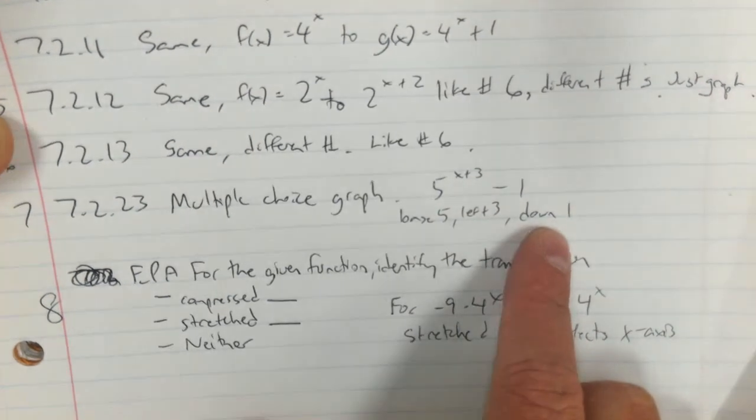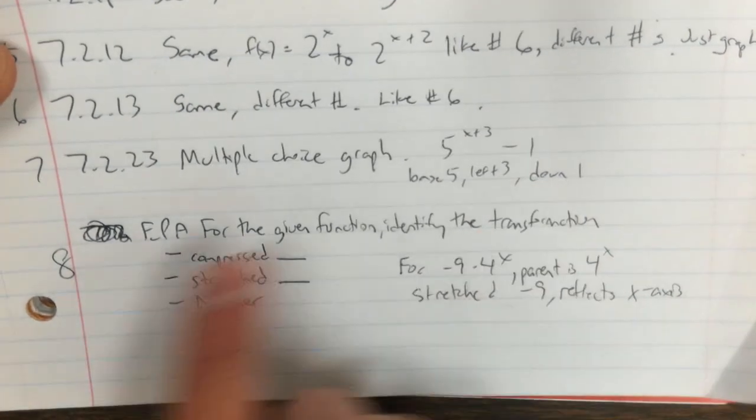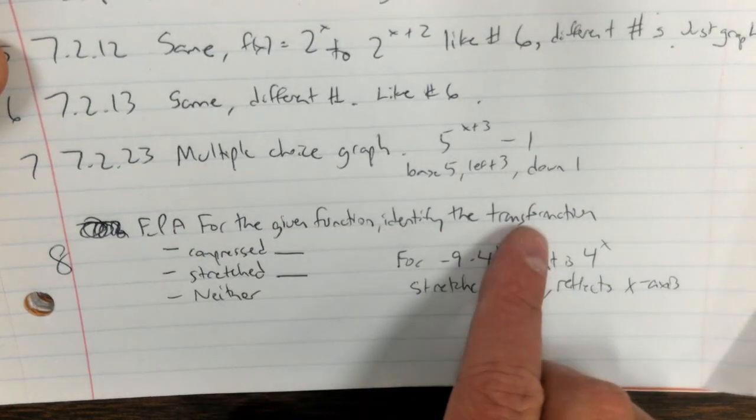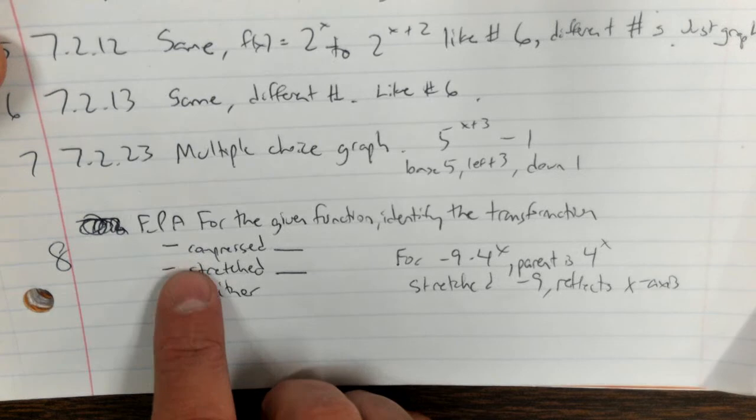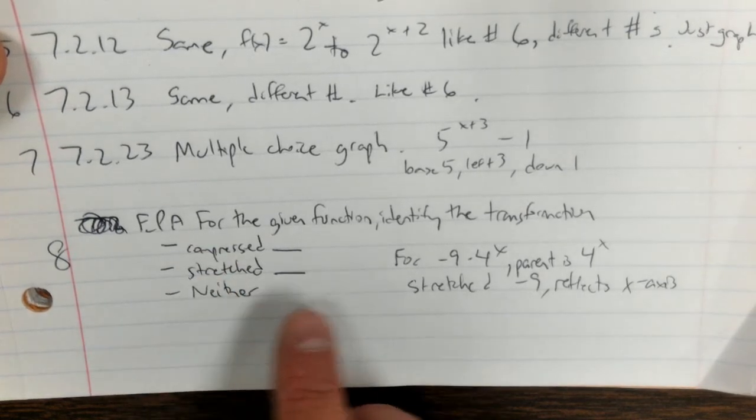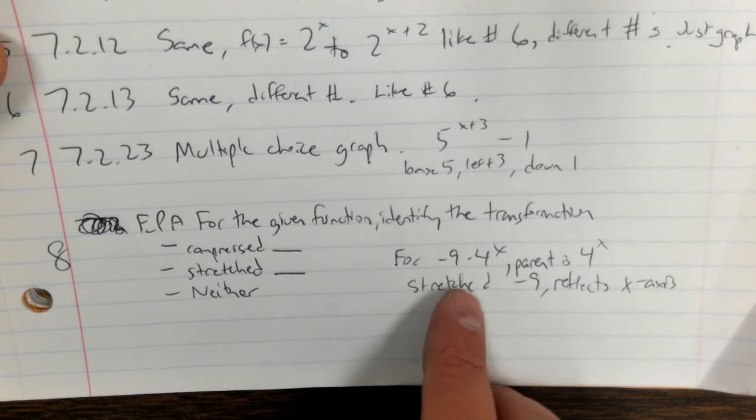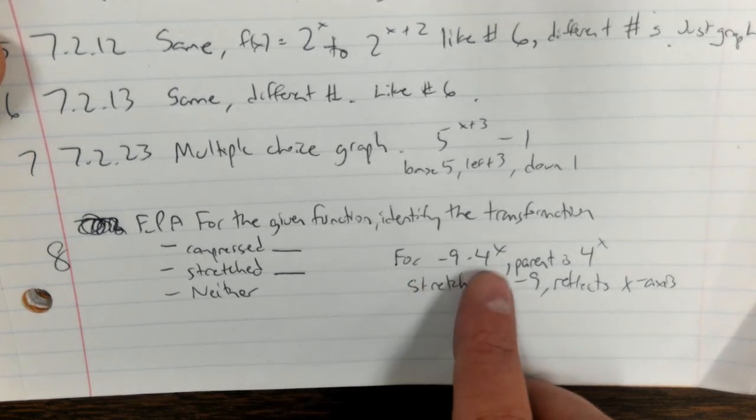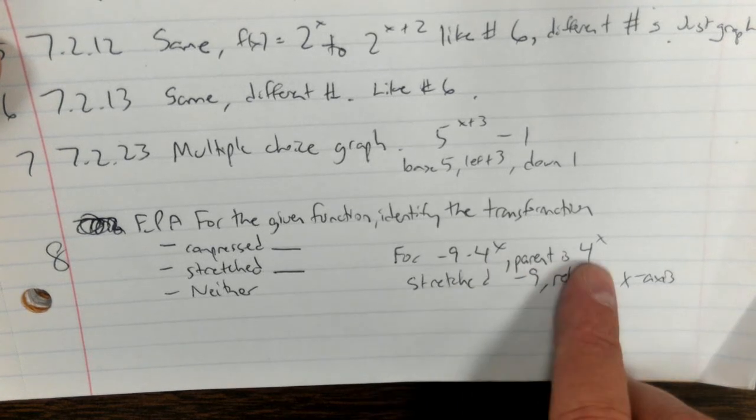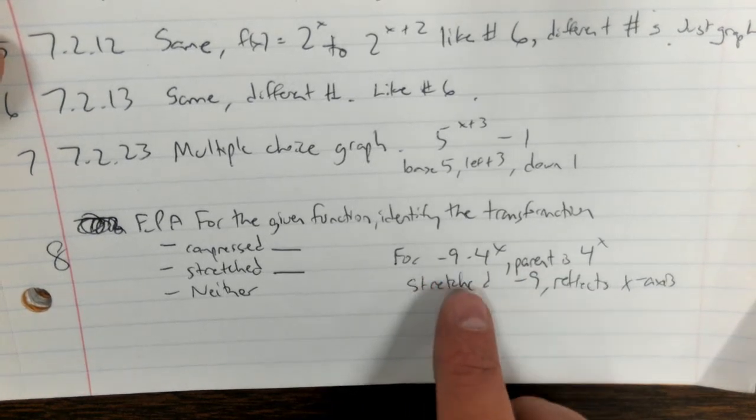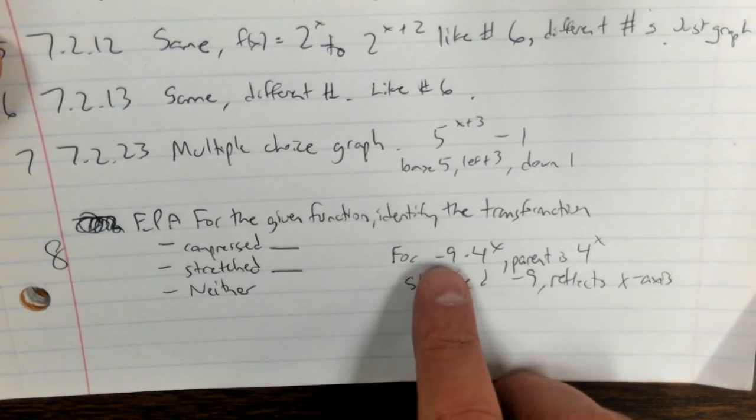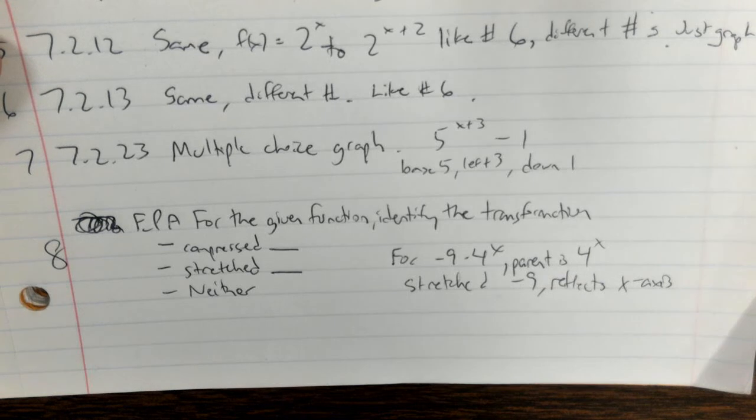Then the last one, extra practice A, says for the given function identify the transformation. It's going to look multiple choice, like is it compressed a certain number, stretched, or neither. So at least for my function it said negative 9 times 4^x, so that meant in my case the parent was 4^x and it's stretched by 9. The reason why it's stretched is because it's a number bigger than 1, and then based on the negative it reflects across the x-axis.